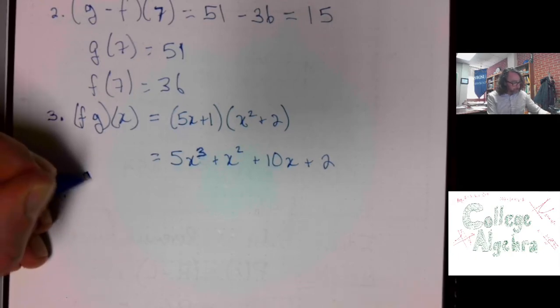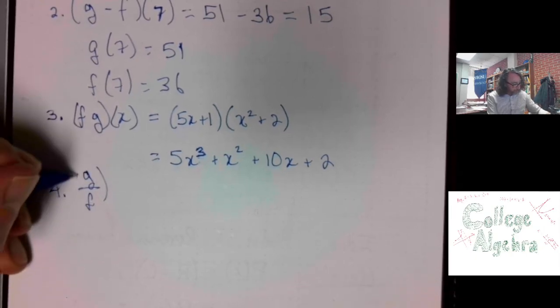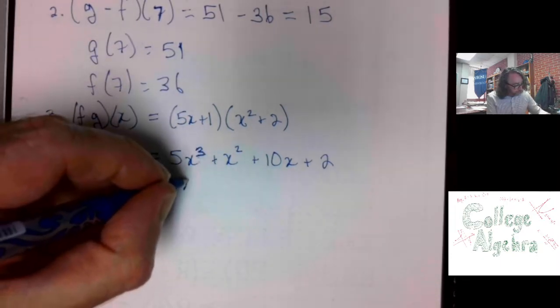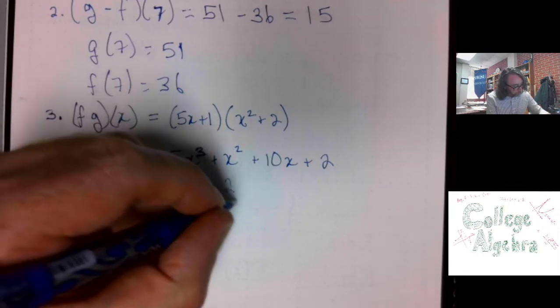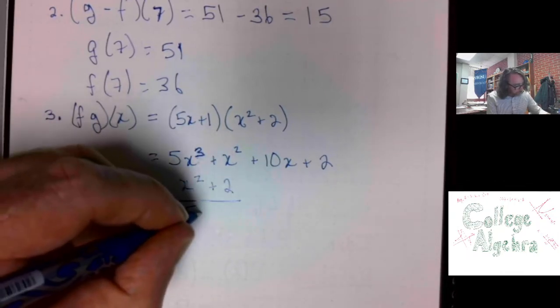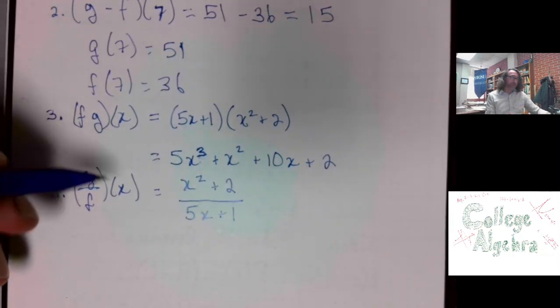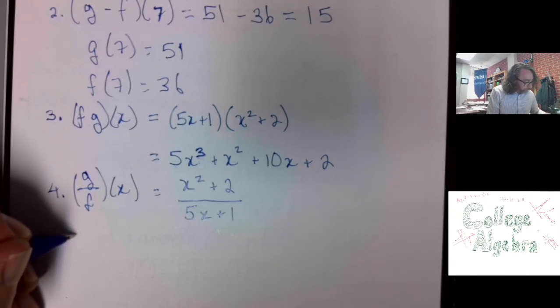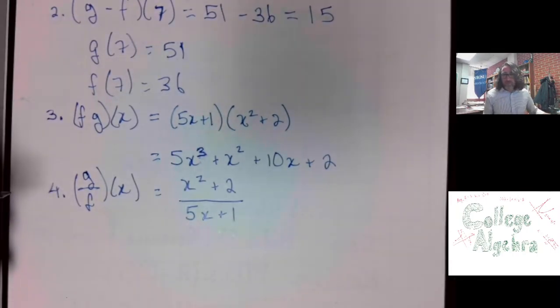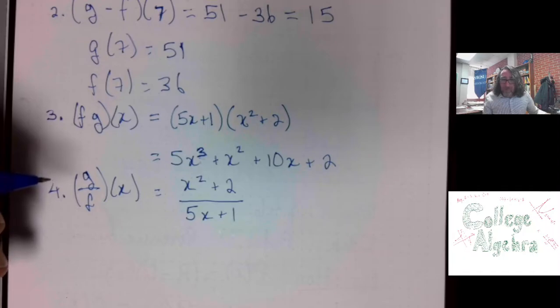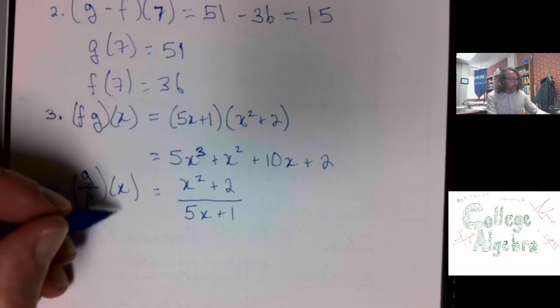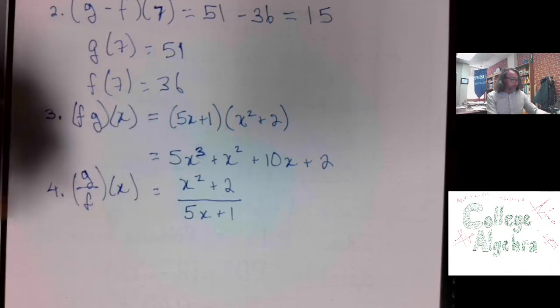Let's try this. Let's do g over f of x. Easy enough. Can't really simplify this. We just take the function g, put it over the function f. So, we've got g over f. We can't really simplify.